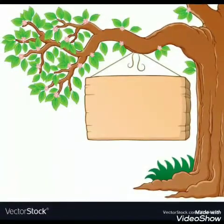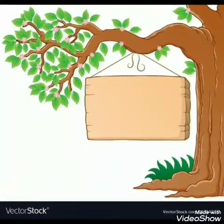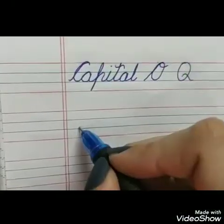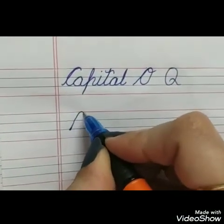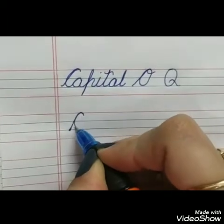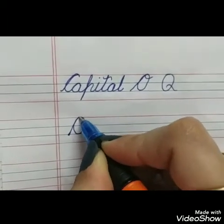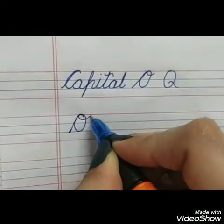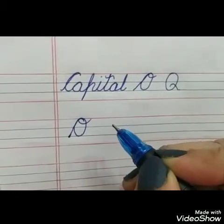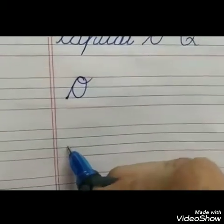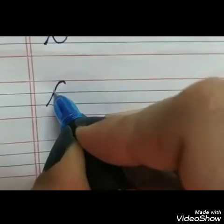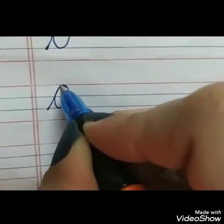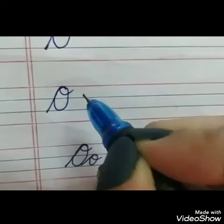Let's see how to write capital O. From the third to the top red line, go back and then close it and make a pattern like this. First you have to make capital C, then close it and make a pattern like this.